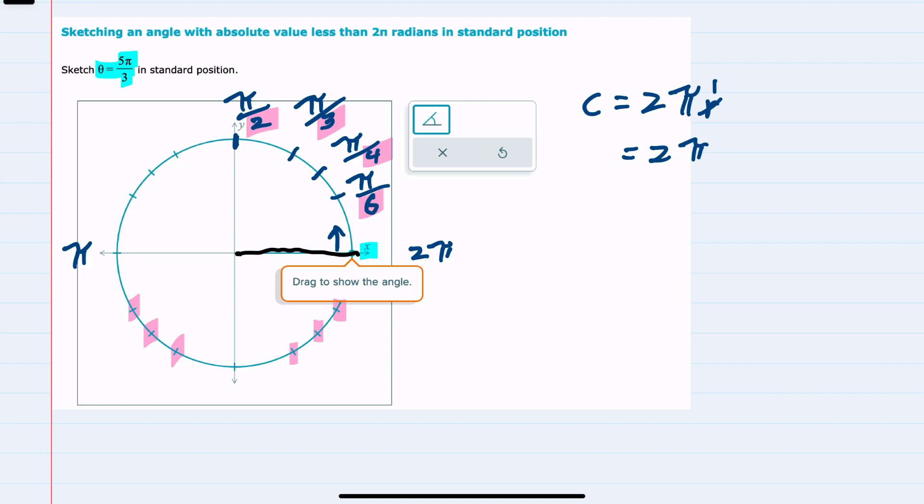In this example when I see 5π over 3 that we are trying to represent here, I know that's more than π so it's not going to be in quadrant one. It's definitely not going to be in quadrant two. 5π over 3 is more than π so it's going to be in at least the bottom part here of our unit circle.